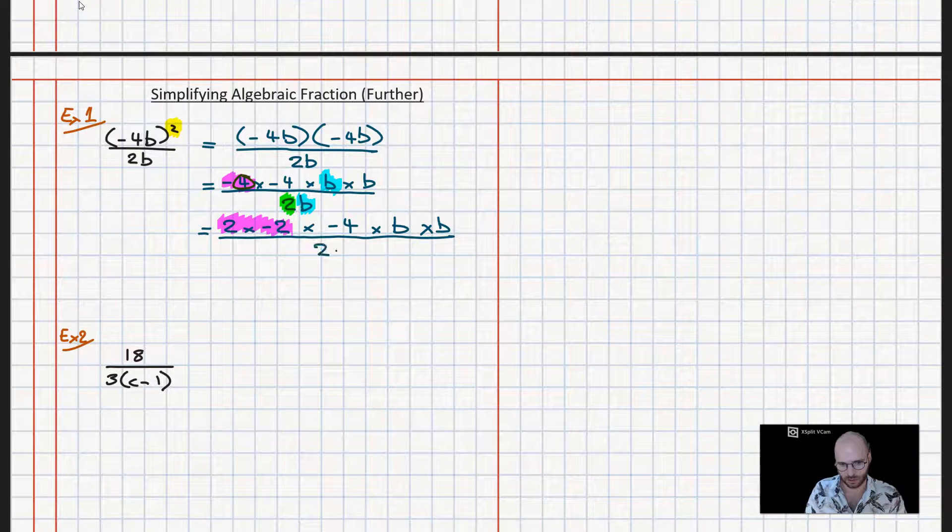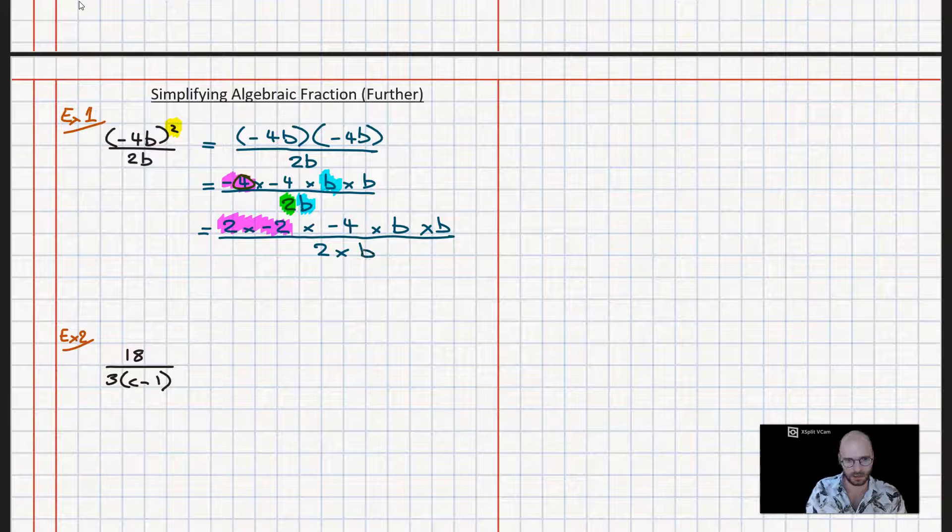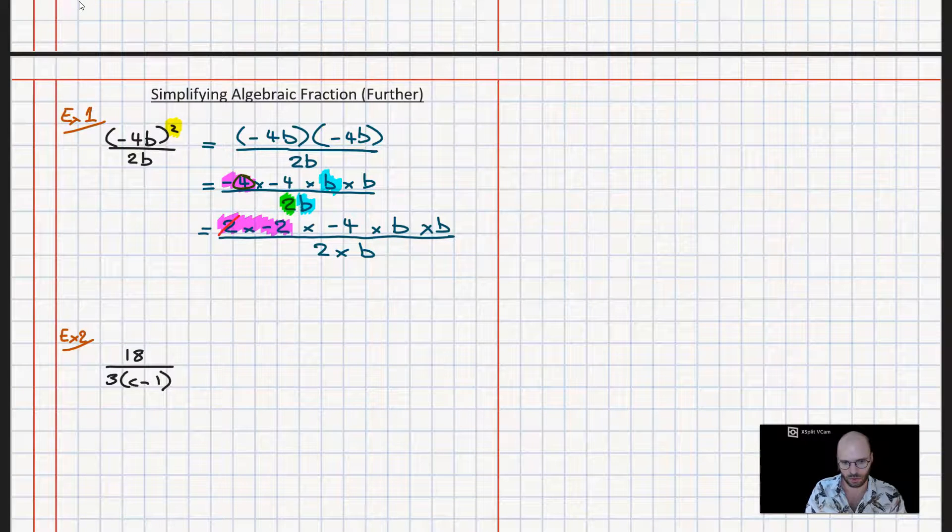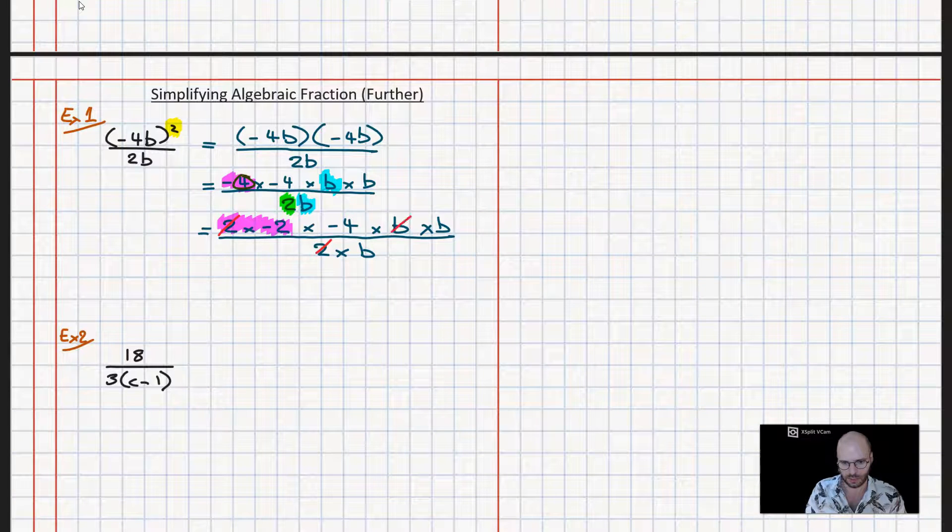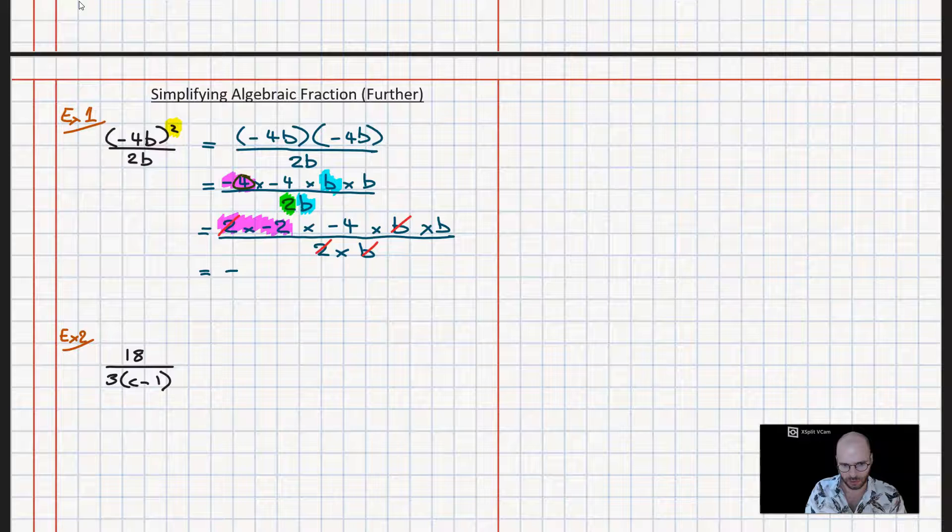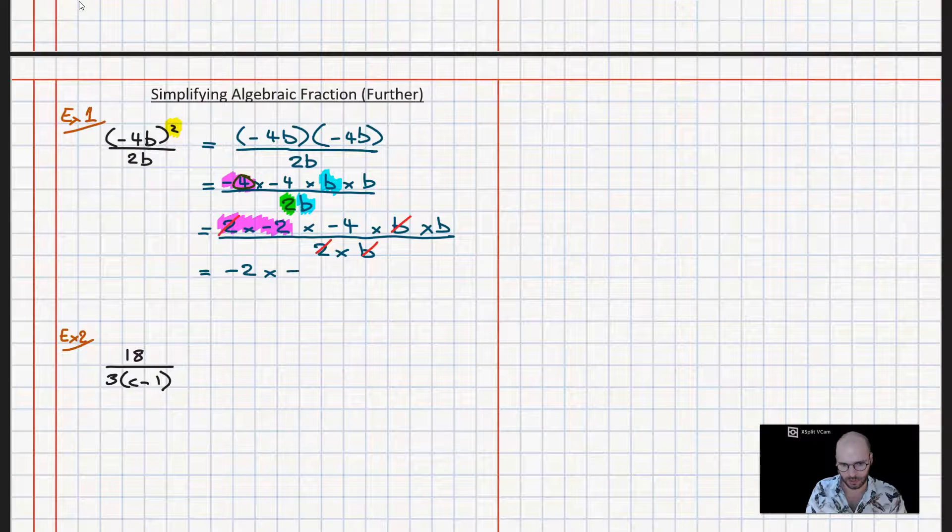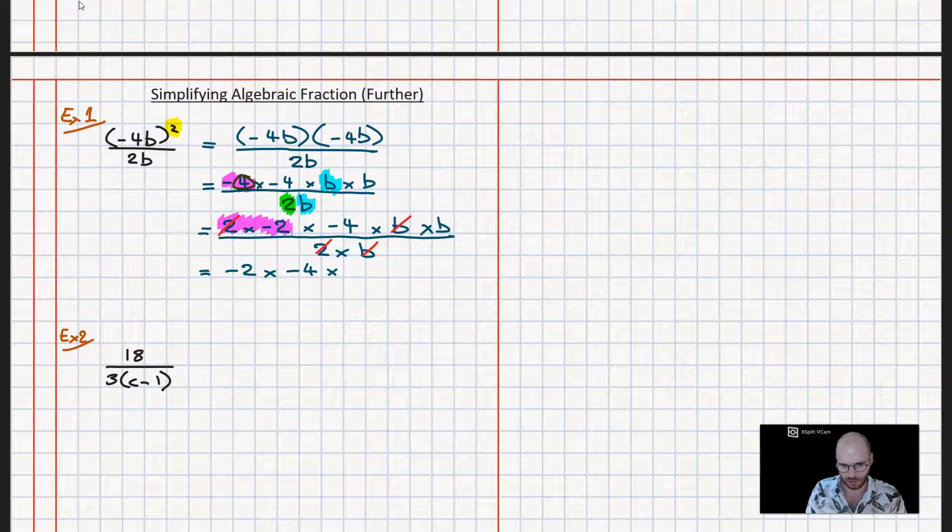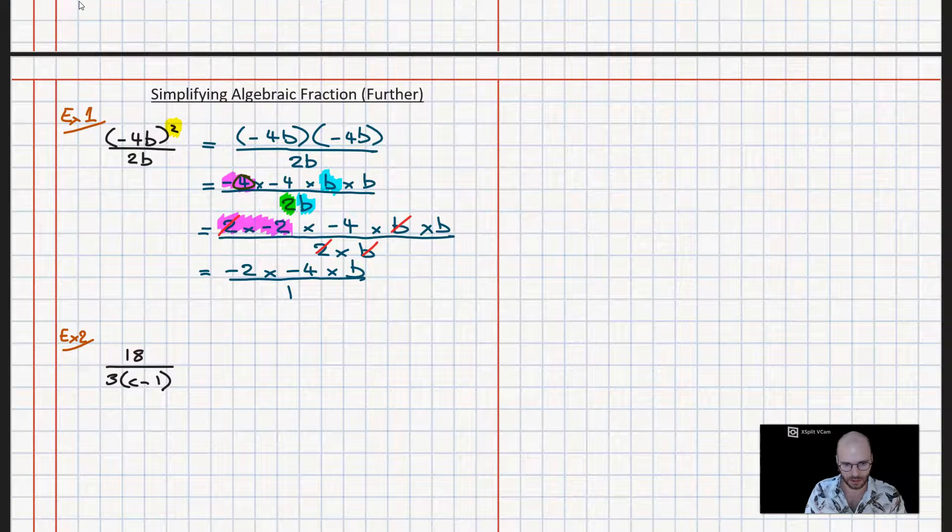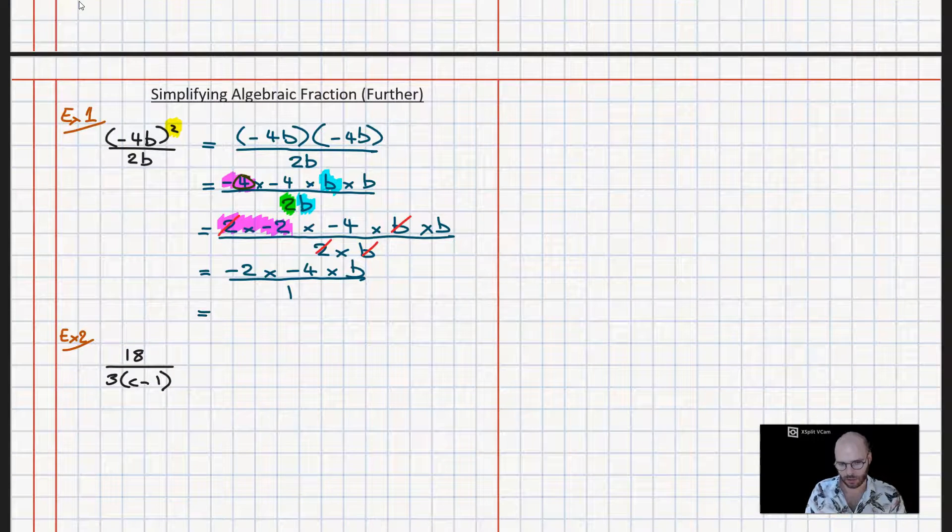Now cancelling out, we've got 2 here, 2 here, b here, and b here. Then I can rewrite this so we get minus 2 times minus 4 times b, and that's all over 1. That's convenient, because it's all over 1 we don't have to worry about it being a fraction.